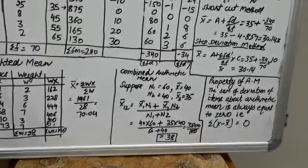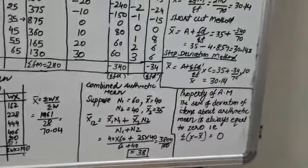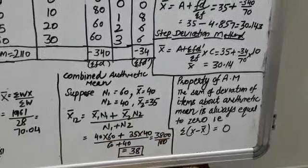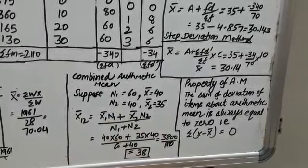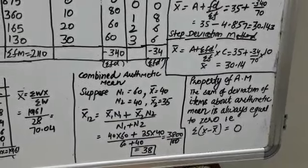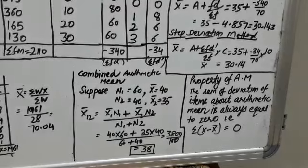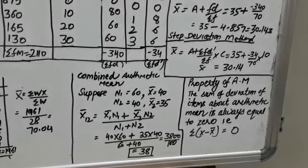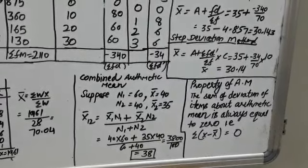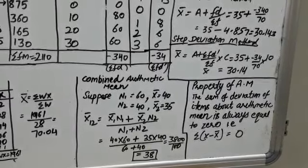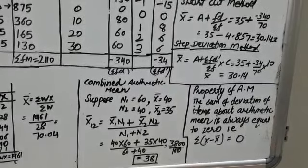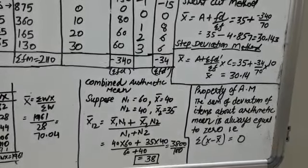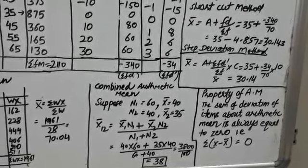Now the mathematical property of arithmetic mean: it is a very interesting property that the sum of deviations of items about the arithmetic mean is always equal to 0. Symbolically, sigma(x minus x̄) = 0. Thank you students. In the next part, we shall try to understand the mathematical property of arithmetic mean.